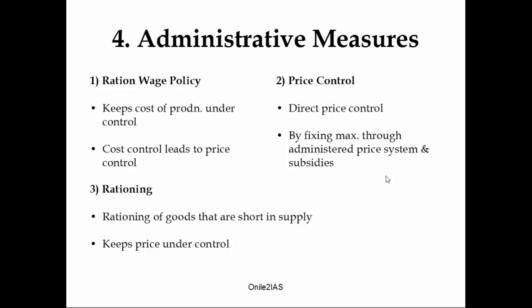The last measure is administrative measures. The first measure under it is wage policy — when the wage is fixed for labor, this reduces or keeps the cost of production under check, and cost control leads to price control. The second measure is direct price control, by fixing maximum prices through an administered price system and subsidies. The third measure is rationing — rationing of goods that are short in supply, which can be done through a public distribution system. This also keeps prices under control.